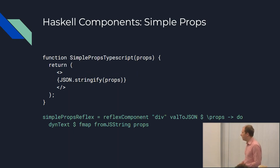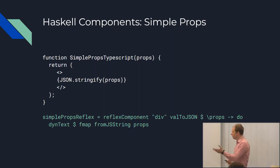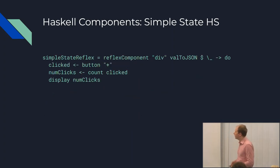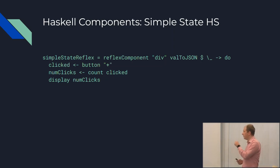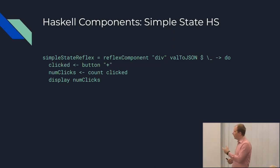Here's an example of writing the same original JSON rendering component using Reflex in React — and you can invoke this from React just like any other component. Here's the state example, and this is where we start to really see benefit from using functional reactive programming. We create a button, which returns its clicked event. We can take that event, pass it through a function 'count', and get a dynamic value of the current count of how many times the event has fired. Then we can call 'display', which is sort of like print but reactive.